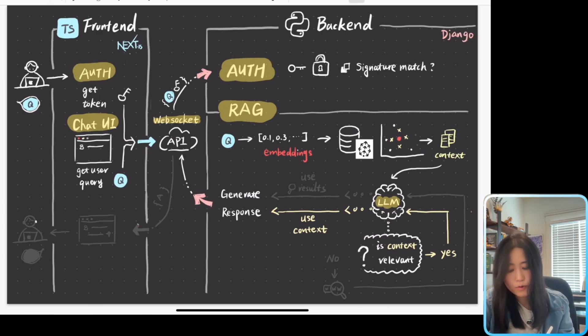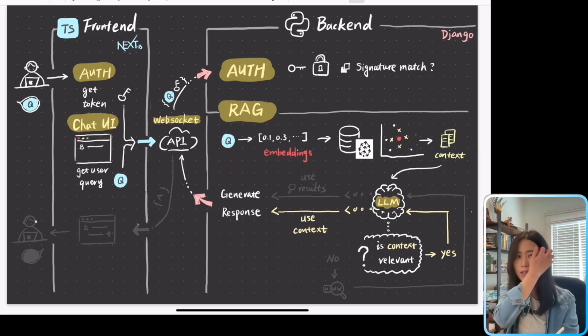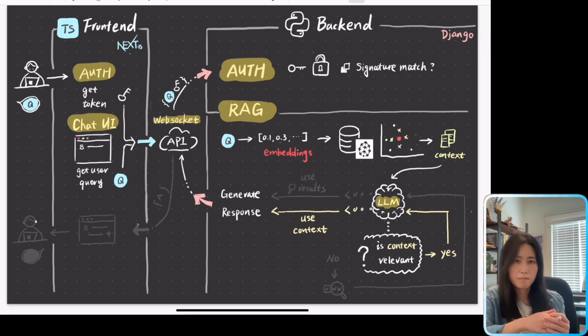That's when the user query is going to be converted into an embedding. Embedding is just a list of numbers, a mathematical representation of semantic meanings, and the embedding is going to send to Pinecone vector database. Pinecone is going to help us find the top K most relevant articles or videos and retrieve them as context and pass it back to a large language model.